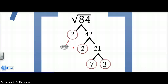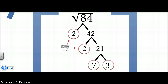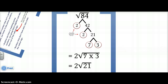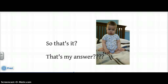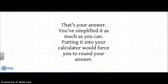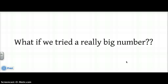Let's look at another example: square root of 84. Factoring out 2's: 2 times 42, then 42 is 2 times 21, and 21 is 7 times 3. Because we have a pair of 2's, they come out of the radical sign. That gives us 2 on the outside, and 7 and 3 have no buddies so they stay in — giving us 2 times the square root of 21. That's the simplified answer. It's as simplified as it can get, and it's an exact answer.